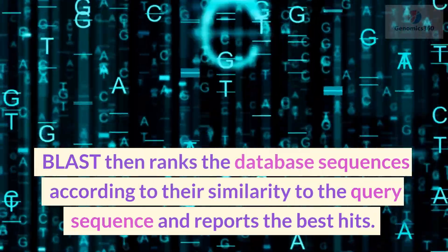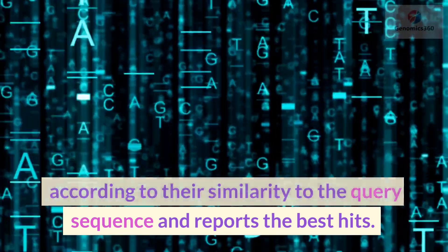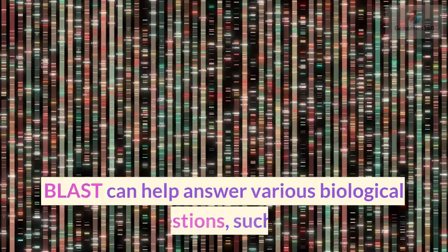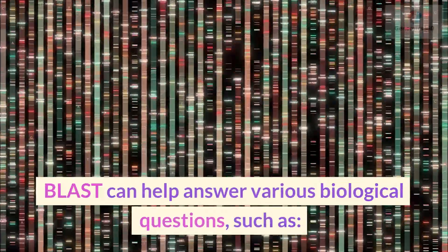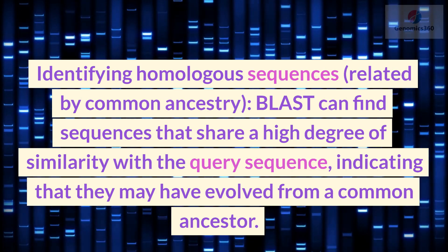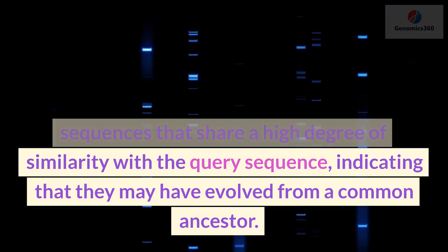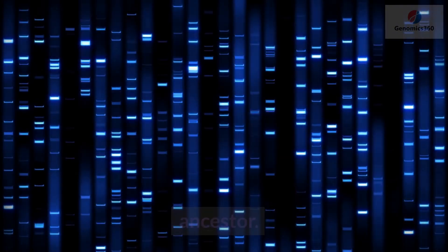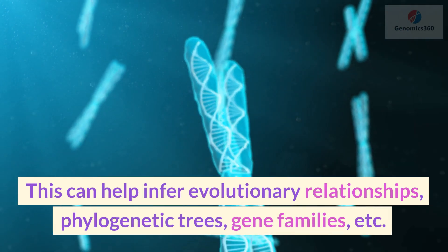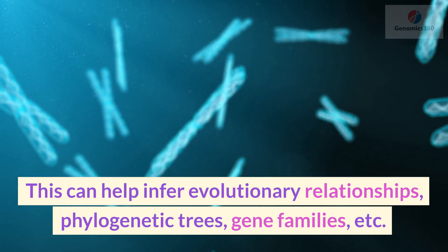BLAST then ranks the database sequences according to their similarity to the query sequence and reports the best hits. BLAST can help answer various biological questions, such as identifying homologous sequences, related by common ancestry. BLAST can find sequences that share a high degree of similarity with the query sequence, indicating that they may have evolved from a common ancestor. This can help infer evolutionary relationships, phylogenetic trees, gene families, etc.